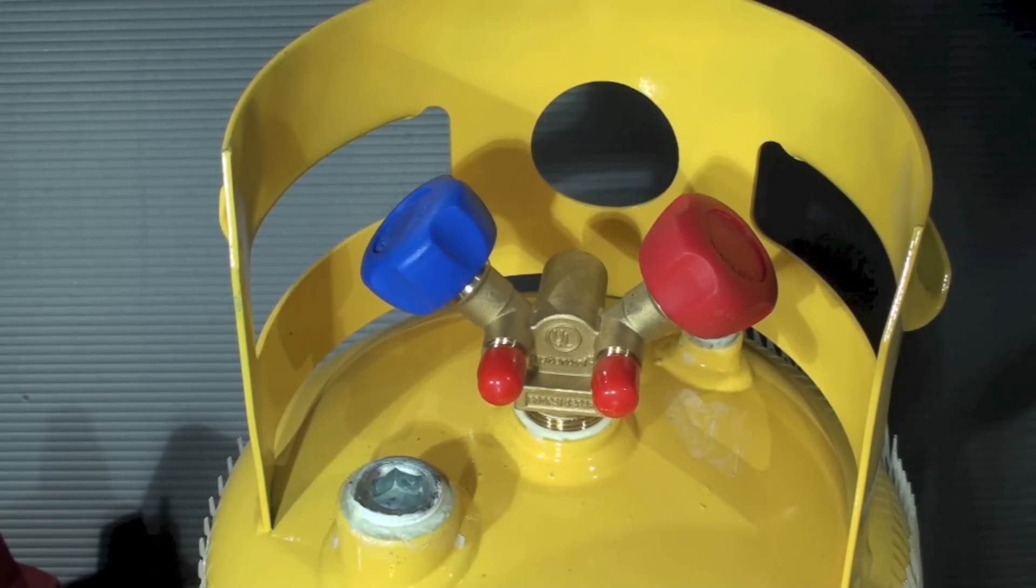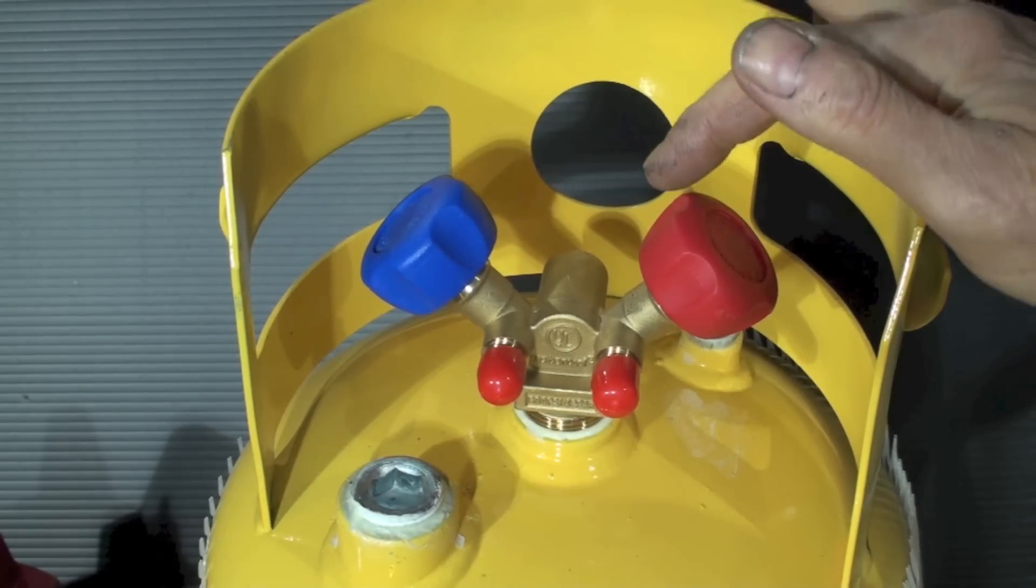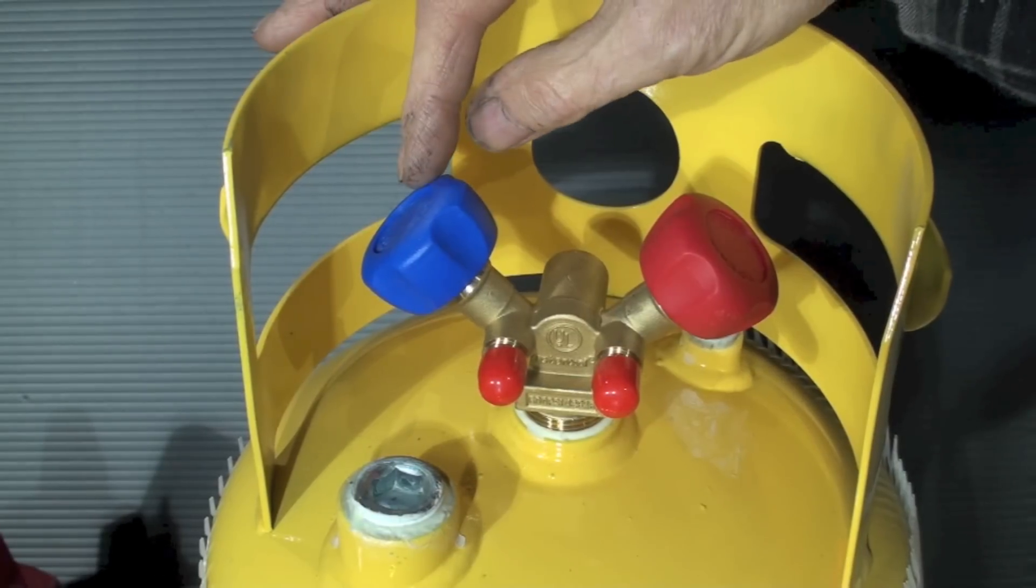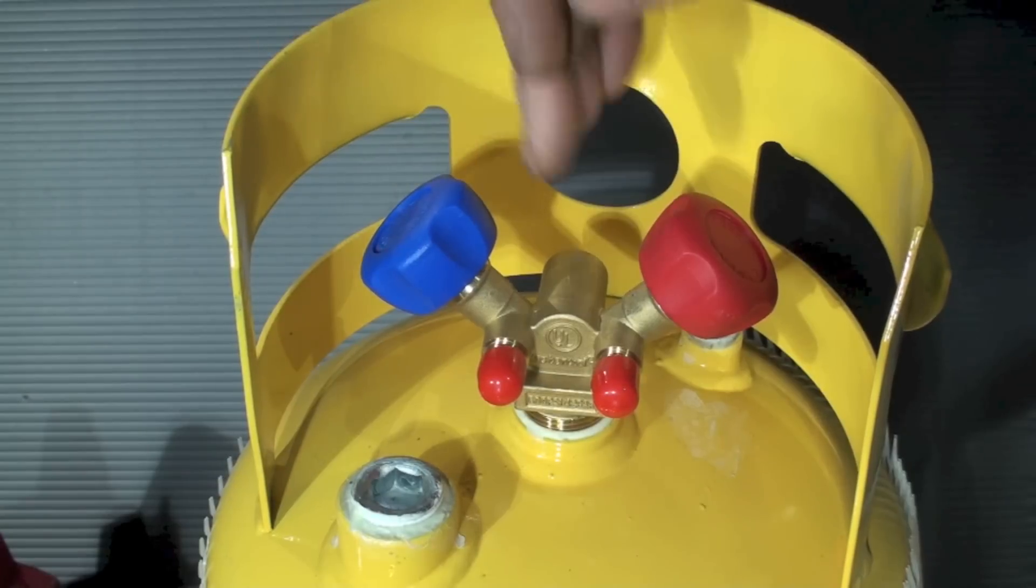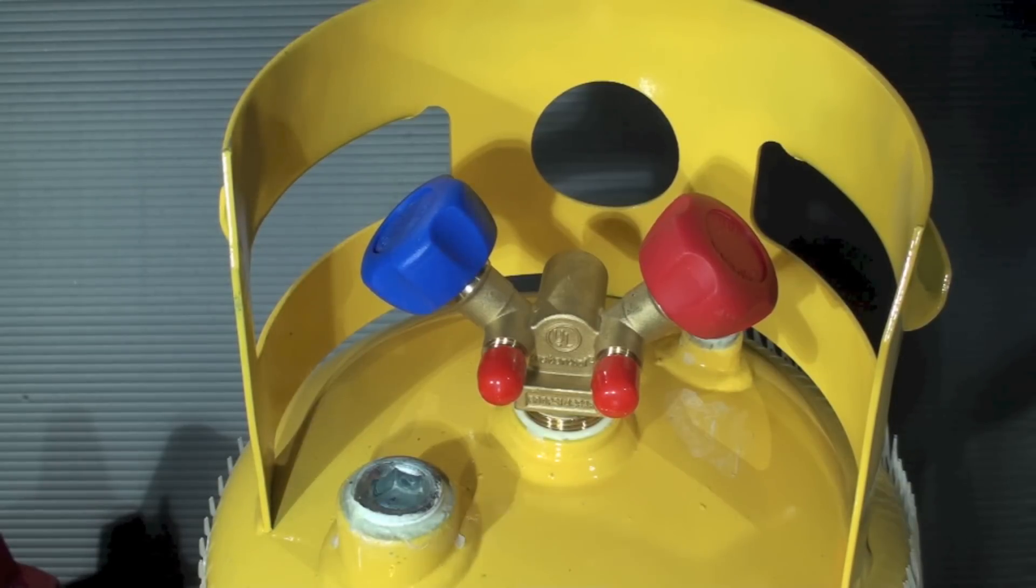If you want to pull liquid out of it, you would open the liquid line. This is the liquid line—it's red. That's the gas line—it's blue. So the gas line is going to go to the top and the liquid line is going to go to the bottom. Now this color code, I'm not sure they're still doing it, but one manufacturer used red for liquid and the other manufacturer used blue for liquid, so you can't really count on the color code.